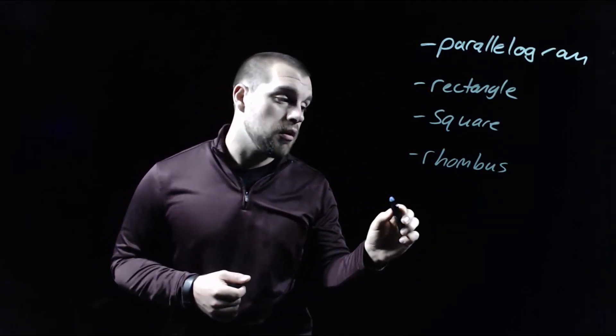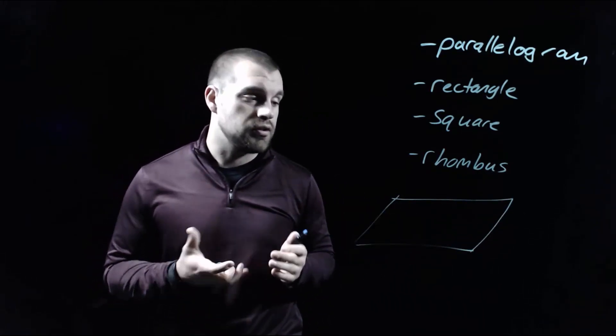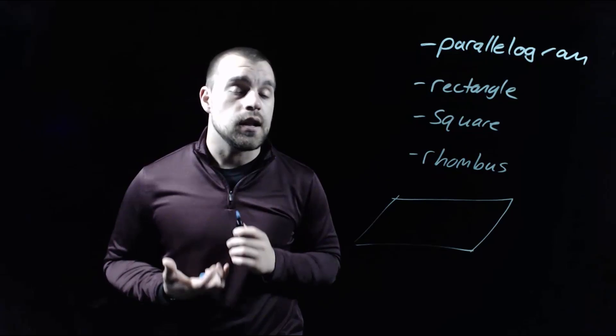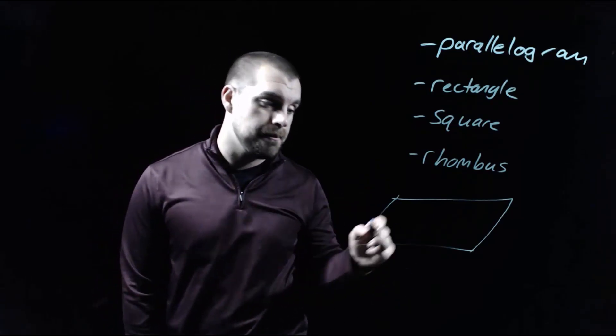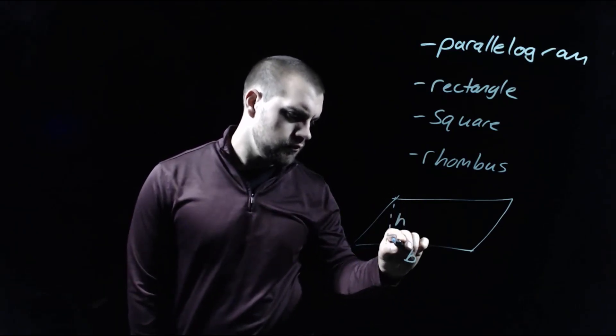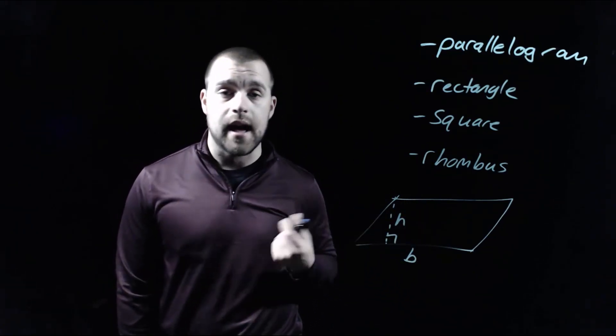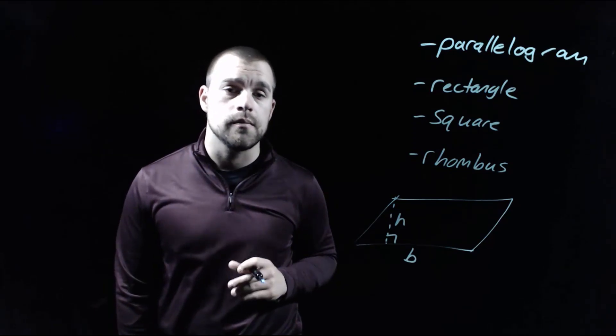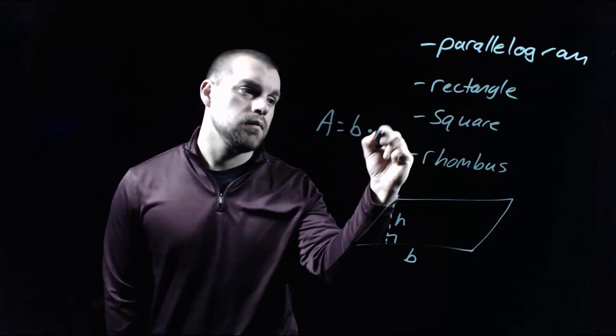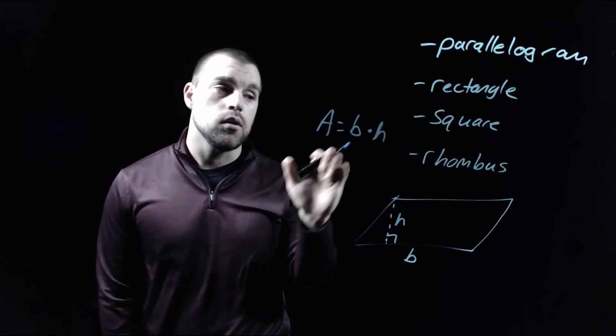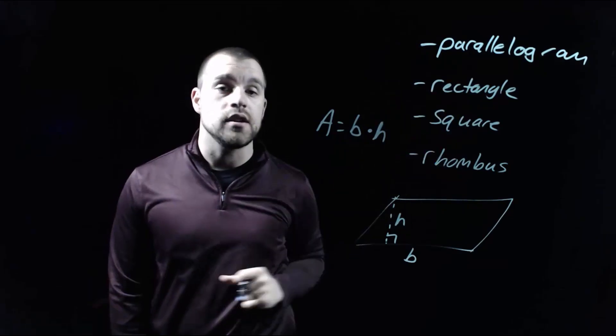So as we're looking at a parallelogram, kind of a general parallelogram, the way we think about it looks something like this. As far as finding its area, what we're going to do is we're going to find the base and the height of our parallelogram. And one of the big important pieces with this is that the base and the height have to be perpendicular to each other. But once we have those values, then our formula says that we just multiply them together. We're going to take the base times the height to find the area of any one of these shapes.